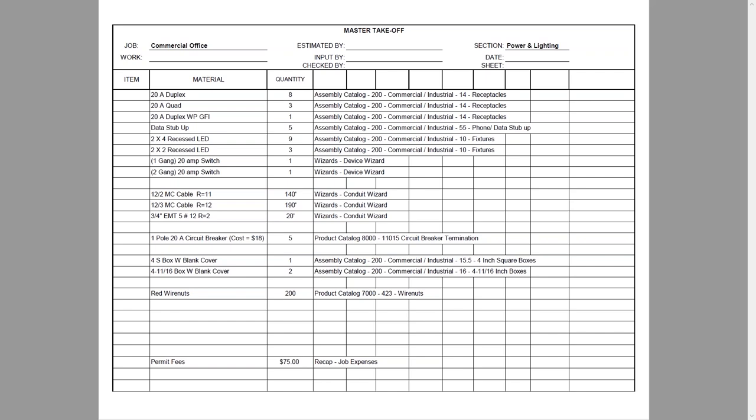On this takeoff form, this is an example of making a material list from the blueprints, then inputting from this list into Red Rhino. Going down the list: 20-amp duplex receptacle, 20-amp quad — there's three of them — 20-amp duplex weatherproof GFI, and so on. Here is the data stub-up — there are five of them.